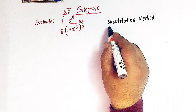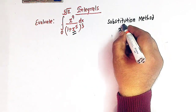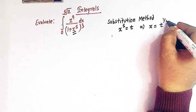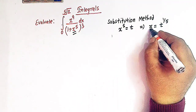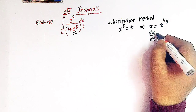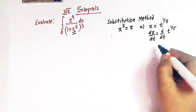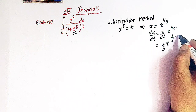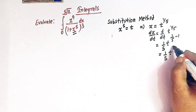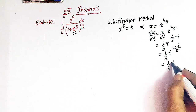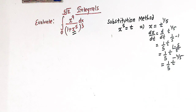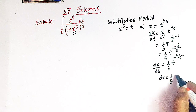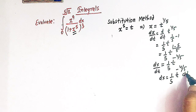We'll make use of the method of substitution and we'll take x raised to 5 equal to t, such that x is equal to the fifth root of t, that is t raised to 1 by 5. Now let us differentiate x with respect to t. So dx over dt is equal to the derivative of t raised to 1 by 5, and using the power rule we have 1 over 5 times t raised to 1 over 5 minus 1, which is 1 over 5 times t raised to minus 4 over 5. So dx equals 1 over 5 times t raised to minus 4 over 5 dt.